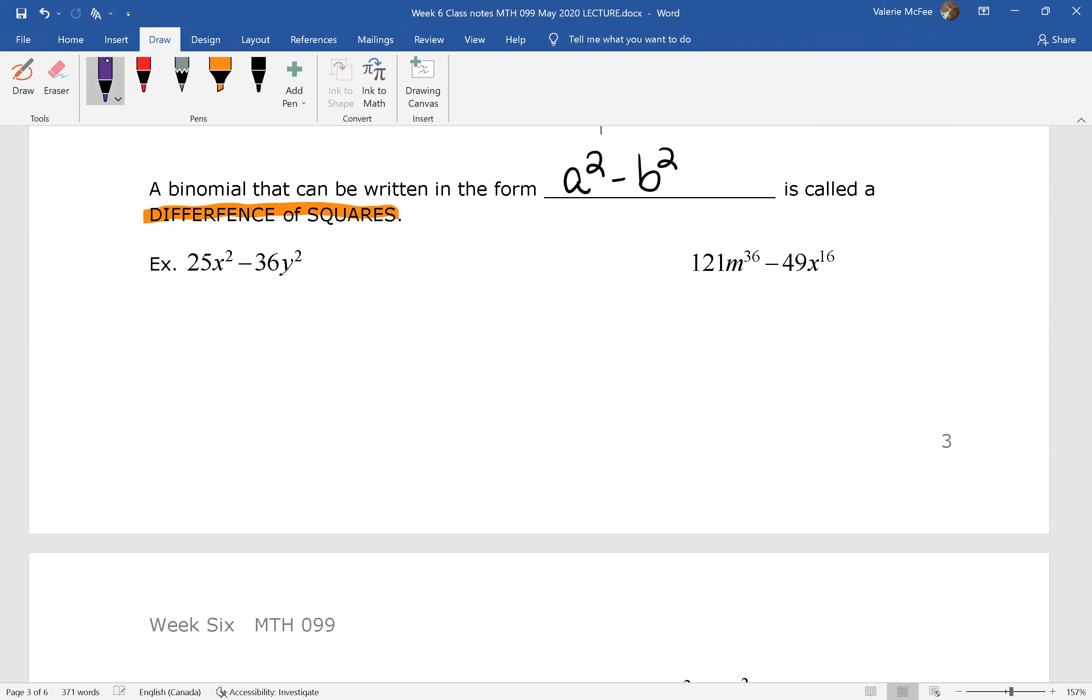If we look at these two examples here, we can write them as a difference of squares. So in the first bracket, 5x is all squared, and the second bracket, 6y is all squared. Why don't you try writing the second one as a difference of squares in brackets?